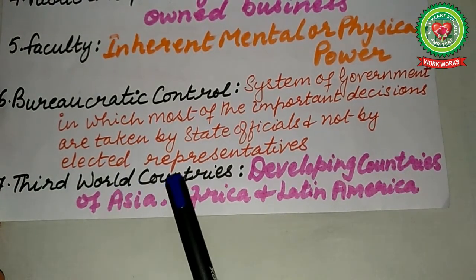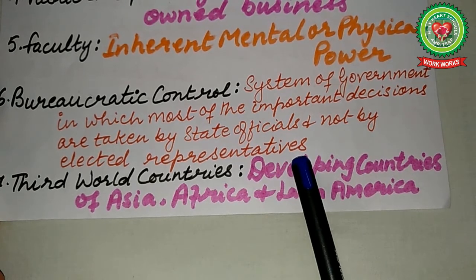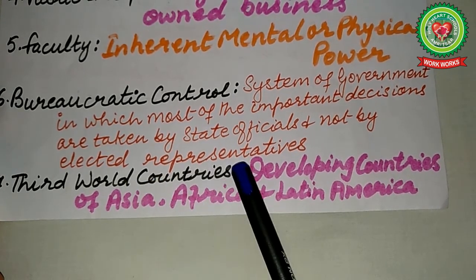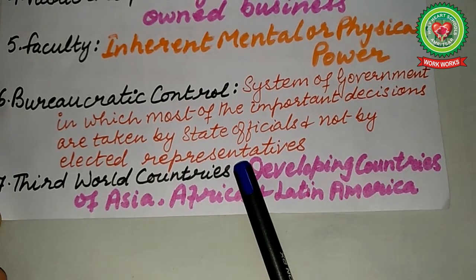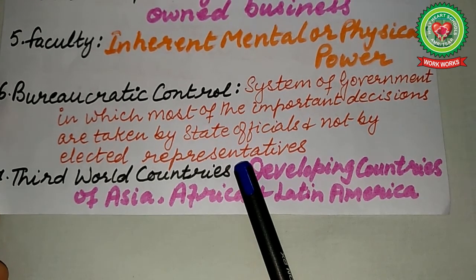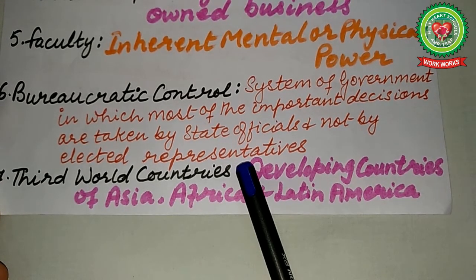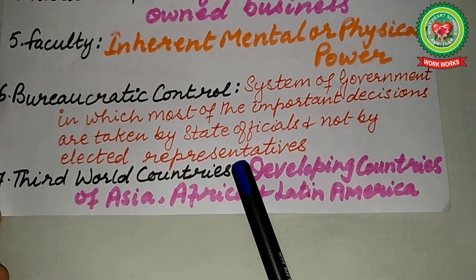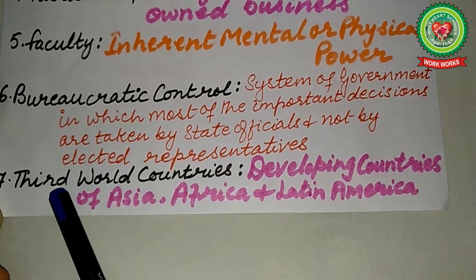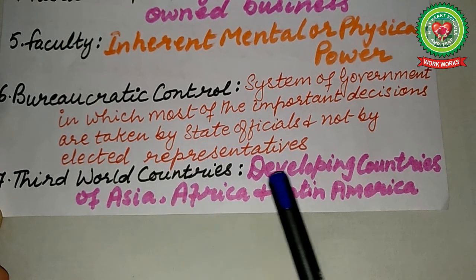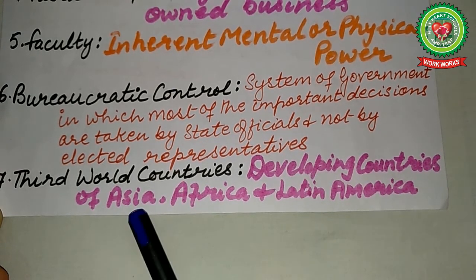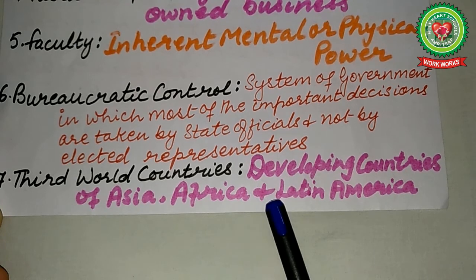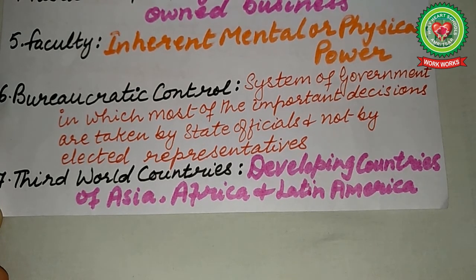Bureaucratic control means decisions are taken by state officials and not by elected representatives. At the national level, elected representatives are members of parliament; at the state level, they are members of legislative assemblies; at the local level, they are councillors. The next key term is Third World countries — developing countries of Asia, Africa, and Latin America.